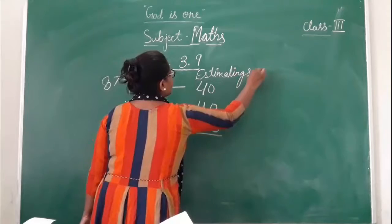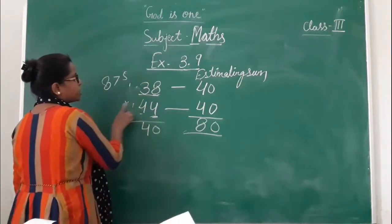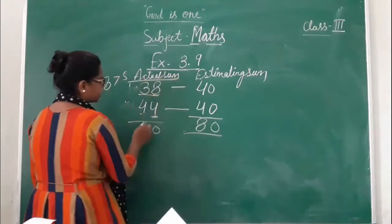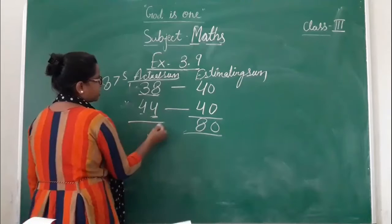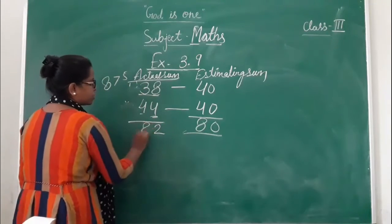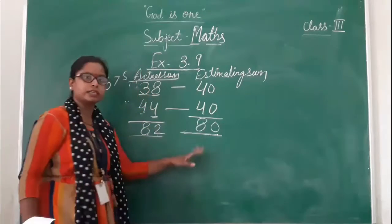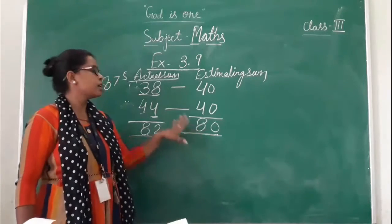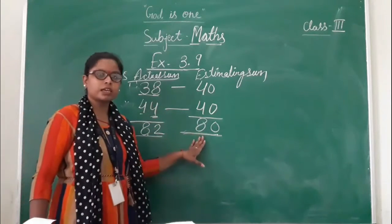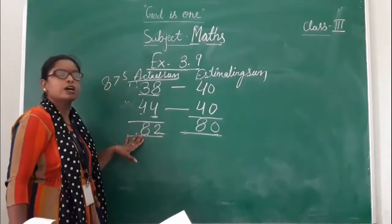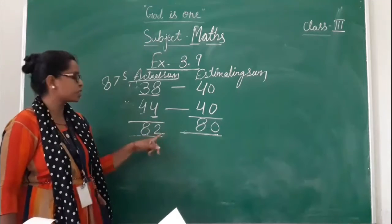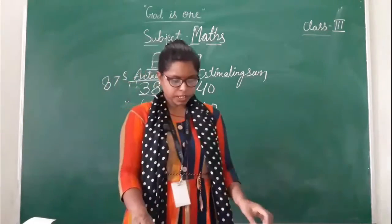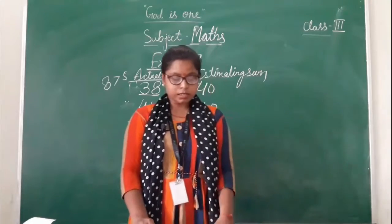The estimating sum is 80. This is our actual number and actual sum. The actual sum is 82 and the estimating sum is 80. Two numbers differ from the estimating sum. When we estimated and added, the result is 80. When we added the actual numbers, the result is 82. So two numbers have changed — here is 82 and here is 80.